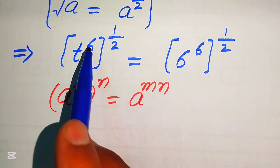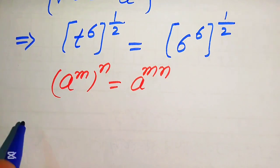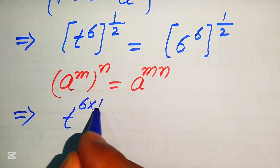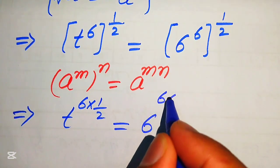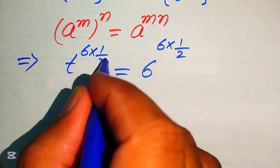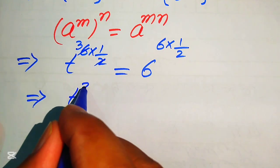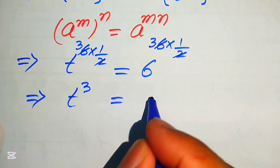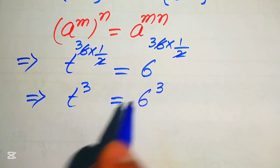According to this exponent law we multiply the two exponents on each side. Our equation becomes t to the power of 6 multiplied by 1 over 2 equals to 6 to the power of 6 multiplied by 1 over 2. Since 2 times 3 equals 6, we get t cubed equals to 6 cubed.